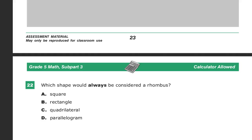This is the grade 5 math practice test for TN Ready. Question number 22 is in subpart 3 now, and the calculator is allowed. I don't know how you'd use a calculator here, but good luck. What shape would always be considered a rhombus?